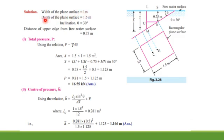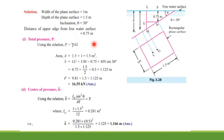The data given: width of plane surface = 1 m, depth = 1.5 m, inclination = 30°, and distance of upper edge from free water surface = 0.75 m. To calculate total pressure P, we use P = γAx̄ — this formula is the same whether the surface is horizontally, vertically, or inclined. Area = 1.5 × 1 = 1.5 m².